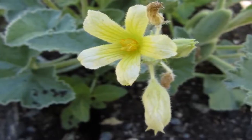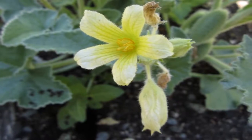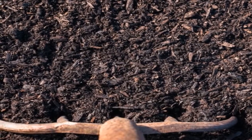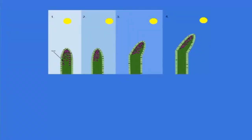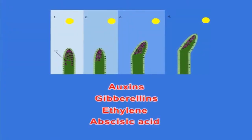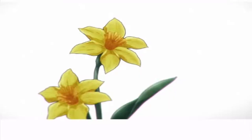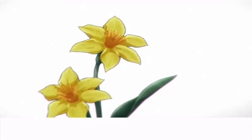One important aspect in cucurbits is sex modification or sex expression. The majority of cucurbits are monoecious and the sex ratio, that is male to female flower ratio, ranges from 20–25:1 to 15:1. The sex ratio is influenced by several environmental factors. High nitrogen in the soil, long days and high temperature favor maleness. Besides environmental factors, endogenous levels of auxins, gibberellins, ethylene and abscisic acid also determine the sex ratio and the sequence of flowering.